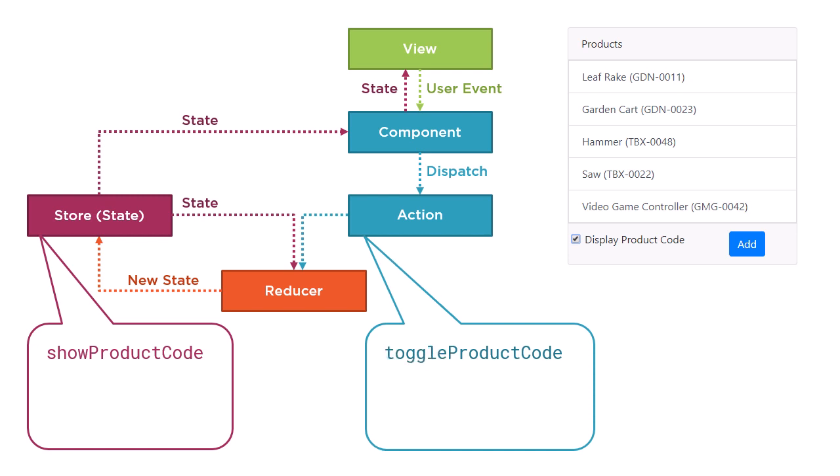Alternatively, we could define one action to toggle the product code, changing it from true to false or false to true. Whether you use one action or two in this scenario really doesn't matter. In either case, our next step is to build a reducer.